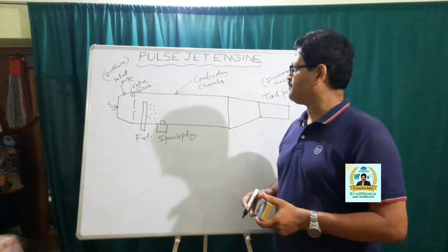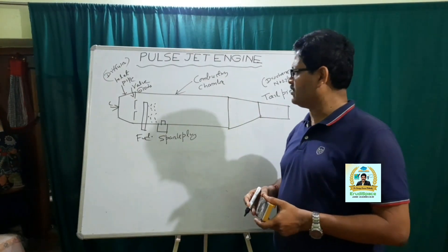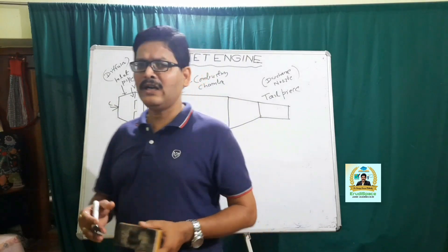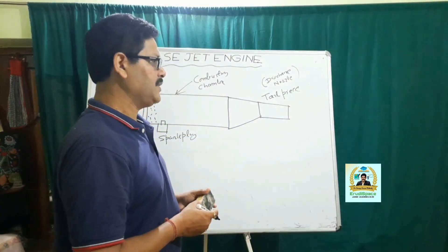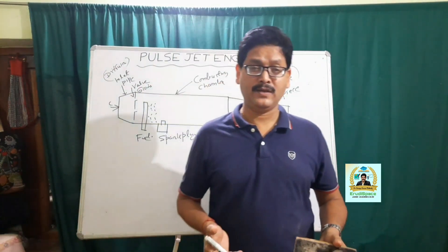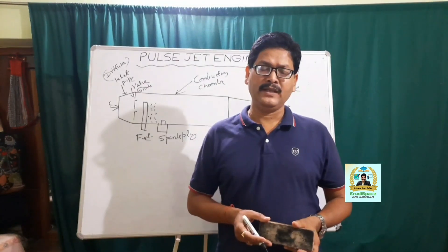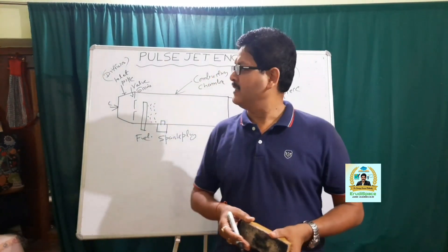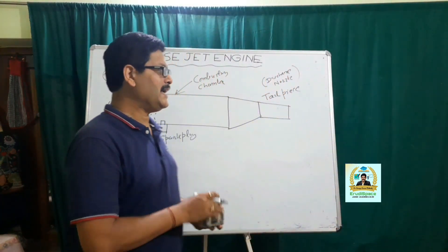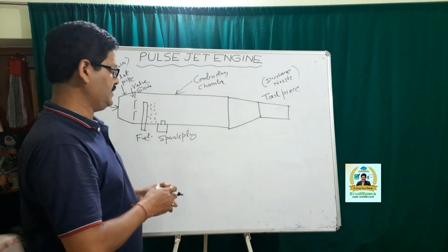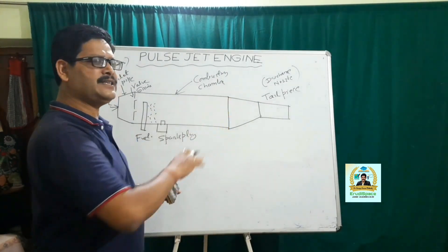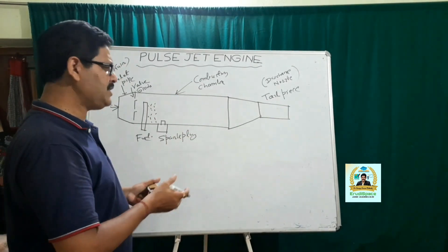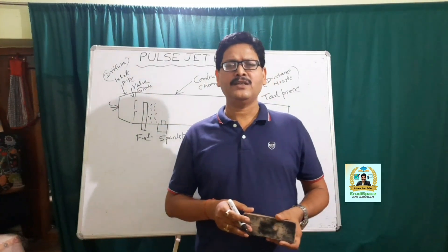One of the important advantages of the pulse jet engine is that, unlike the ramjet engine which cannot develop thrust from the beginning and requires a launching device, the pulse jet engine can develop thrust from the beginning itself. That is one of the major advantages of the pulse jet engine over the ramjet engine, for which it finds more application.